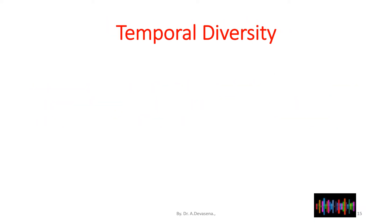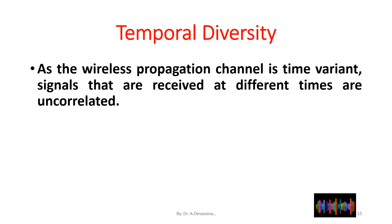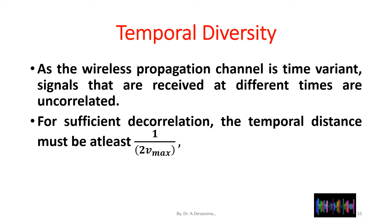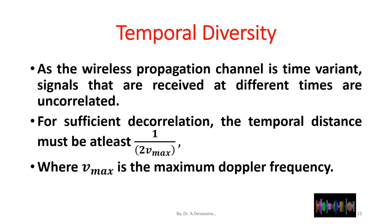The next diversity is temporal diversity. As a wireless propagation channel is time variant, signals received at different times are uncorrelated. For sufficient decorrelation, the temporal distance must be at least 1 divided by 2·Vmax, where Vmax is the maximum Doppler frequency.